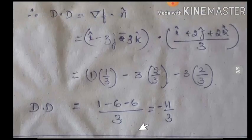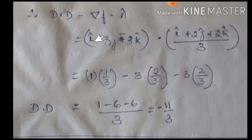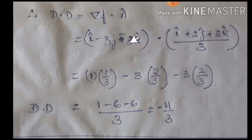Now find the directional derivative by substituting into the formula del f dot n cap. Write del f as (i cap minus 3j cap minus 3k cap) dotted with (i cap plus 2j cap plus 2k cap) divided by 3. Using i dot i = 1: we get 1 times 1/3, minus 3 times 2/3, minus 3 times 2/3. Simplifying gives minus 11 by 3. So the directional derivative of the given function f is minus 11/3.